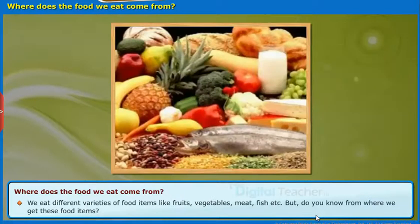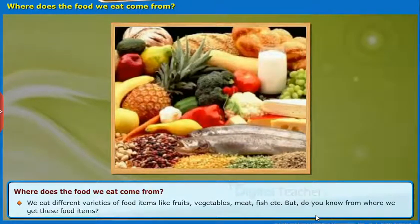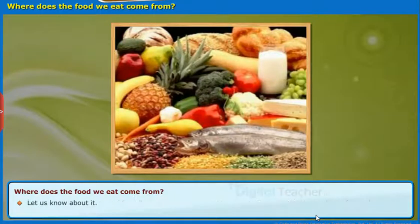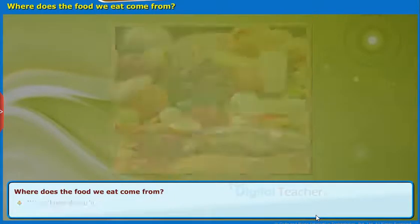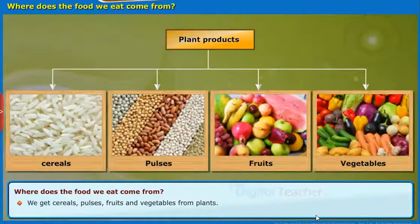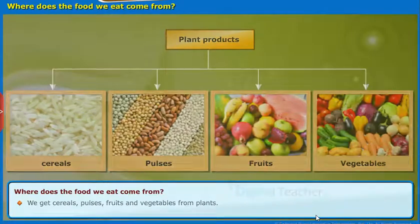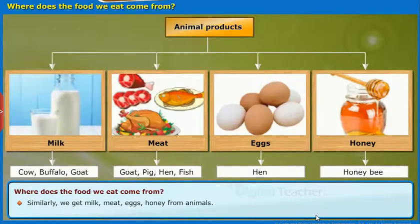We eat different varieties of food items like fruits, vegetables, meat, fish, etc. But do you know where we get these food items from? We get cereals, pulses, fruits, and vegetables from plants. Similarly, we get milk, meat, eggs, and honey from animals.